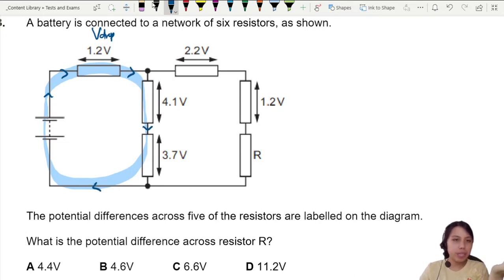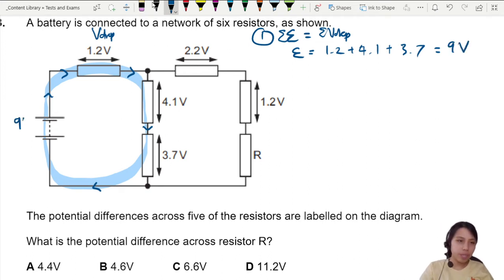So I need to add together. Let's say EMF is going to be this Kirchhoff's law, the sum of potential drop in the loop. So EMF with only one battery will be 1.2 plus 4.1 plus 3.7, giving me a value of nine volts. So this is going to be nine volts.